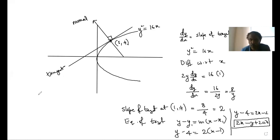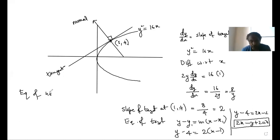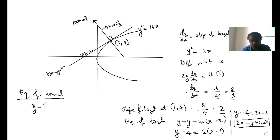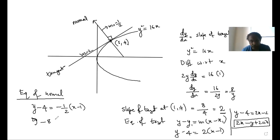Then what is the equation of normal? The slope of the tangent is 2, so the slope of the line perpendicular to it will be minus 1 by 2. Equation of normal: y minus 4 equals minus 1 by 2 times (x minus 1). Expanding: 2y minus 8 equals minus x plus 1, so x plus 2y minus 9 equals 0.